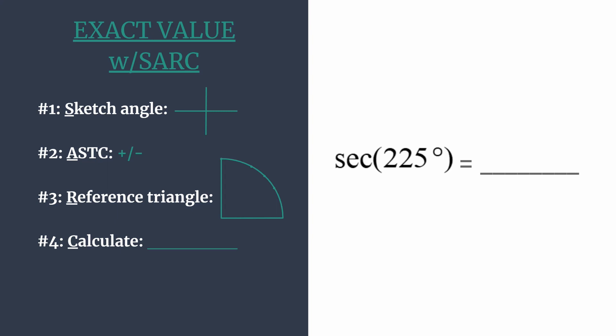It's a positive angle so it rotates counterclockwise: 0, 90 degrees, 180 degrees, 270 degrees. So we know 225 falls exactly halfway between 180 and 270. Our terminal side is in quadrant 3.